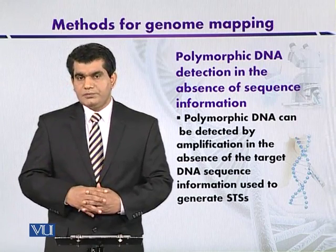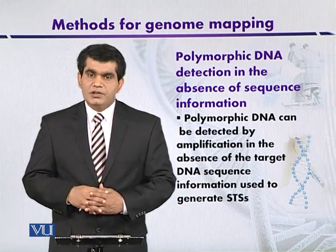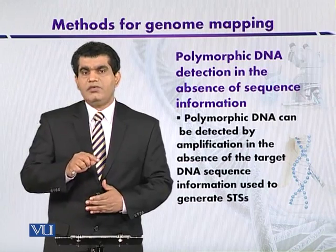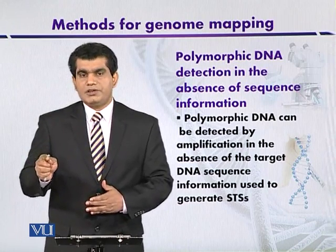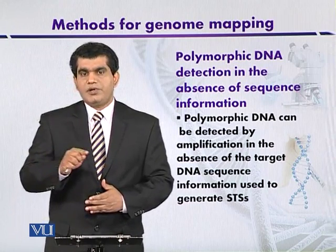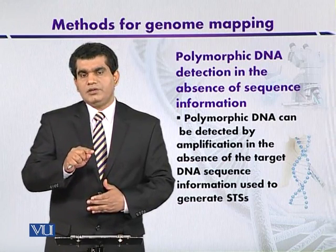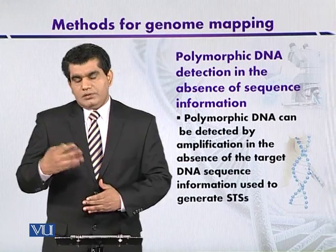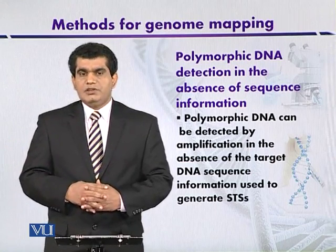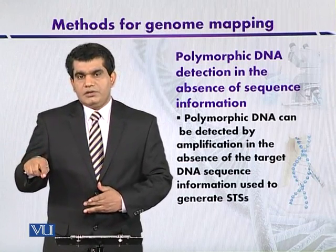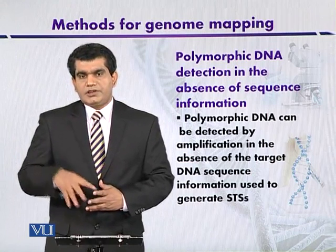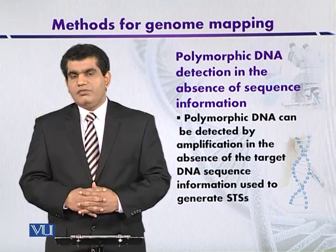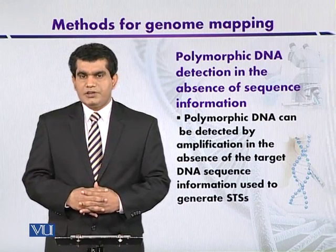A palindrome means the sequence reads the same in the 5 prime to 3 prime direction. For example, in the 5 prime to 3 prime direction the bases may be Adenine, Guanine, and so on — and the same in reverse. So the primers should not read the same in the 5 prime to 3 prime direction.